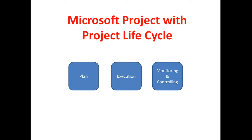Microsoft Project works with the project lifecycle. In the project lifecycle, we know that there is initiation, planning, execution, monitoring, control, and closing. We need to follow the scope of the project. We need to do the planning — the WBS, tasks, schedule, critical path, and budgeting. We need to update the plan, execute with actual data, and perform monitoring and reporting.